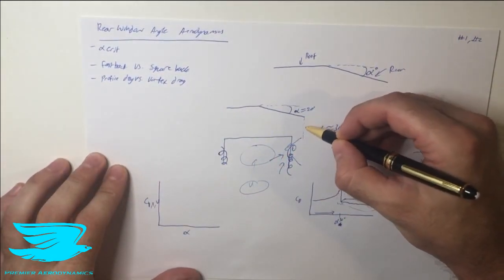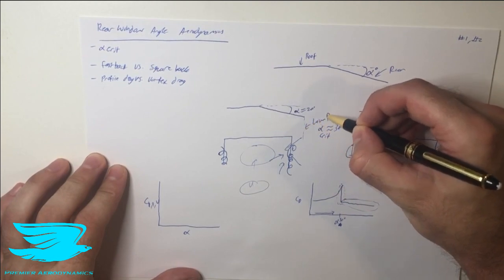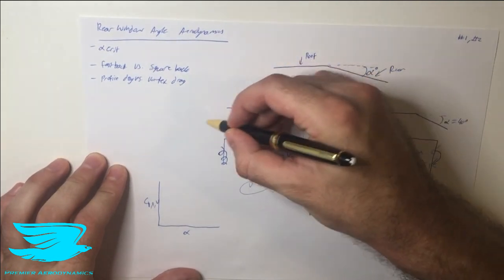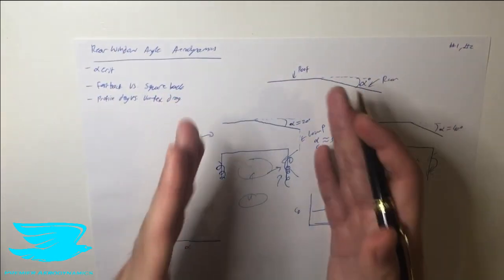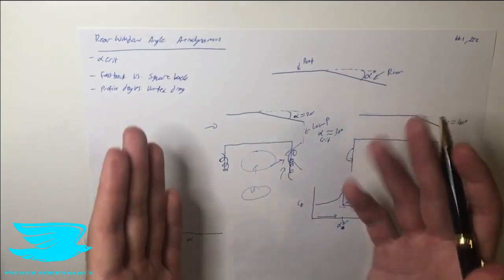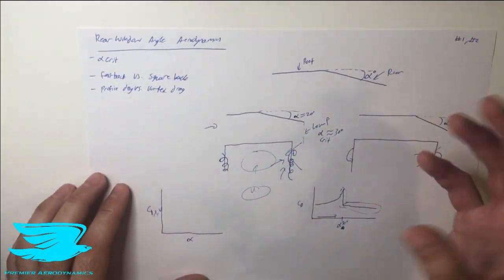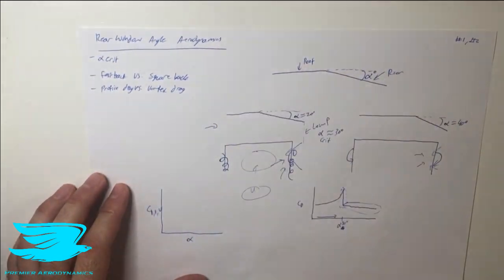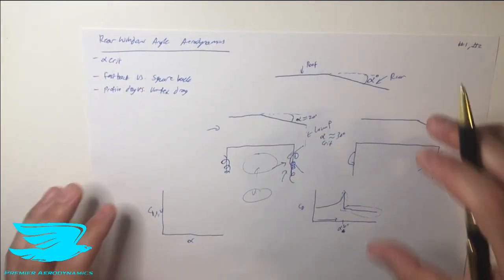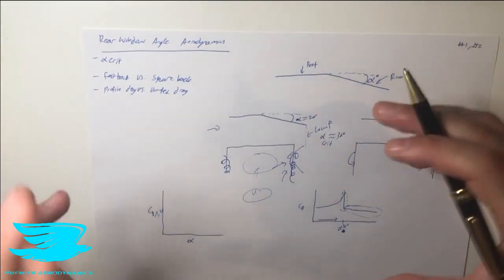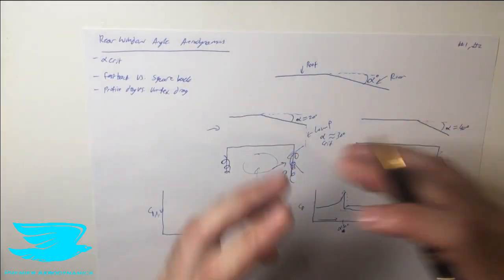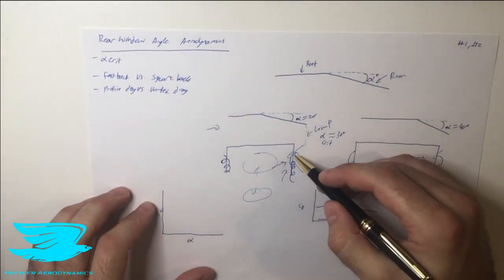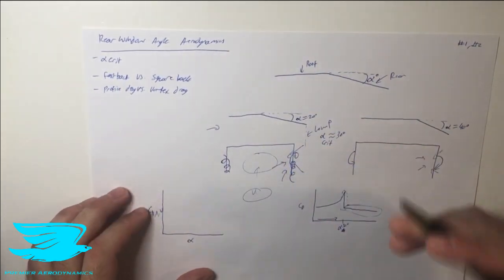Profile drag is the drag from skin friction and pressure combined. For example, if we have low pressure at the back of the rear window and high pressure at the front, the difference is a net negative pressure, giving a resistive force — that's pressure drag. So profile drag equals skin friction drag plus pressure drag, while vortex drag is solely the drag from the vortices themselves.